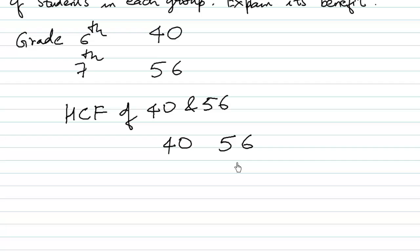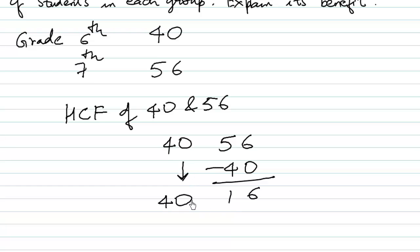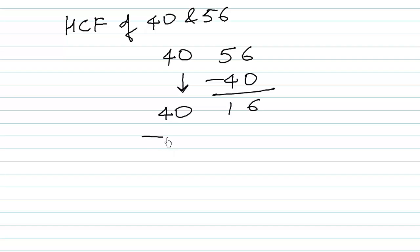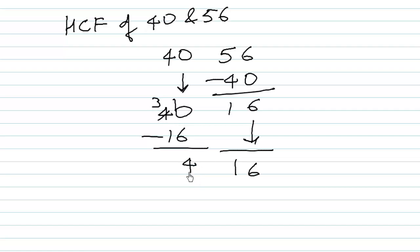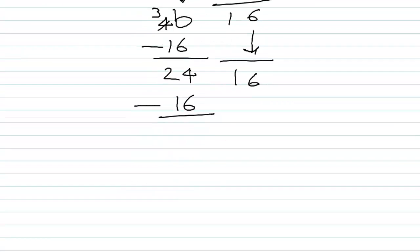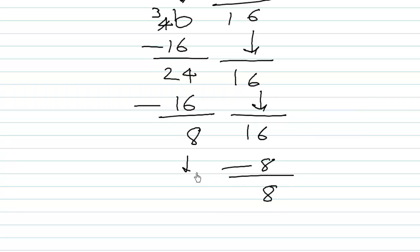Let us solve this using the subtraction method. Starting with 40 and 56, we subtract the smaller from the larger: 56 − 40 = 16. Then 40 − 16 = 24, bring down 16. Then 24 − 16 = 8, bring down 16. Then 16 − 8 = 8. Since both numbers are now 8, the HCF of 40 and 56 is 8.